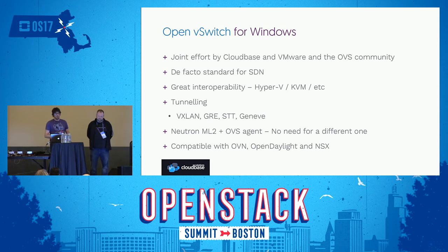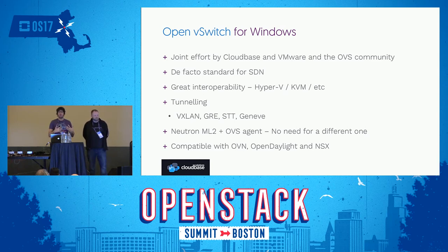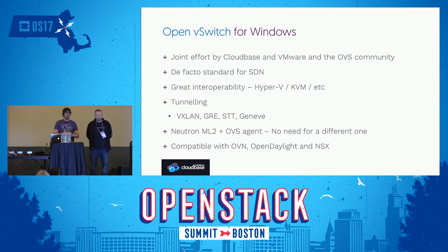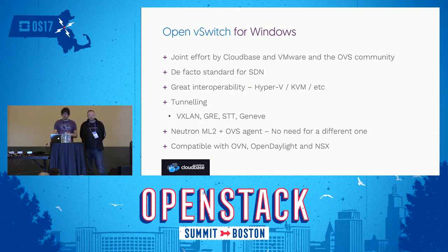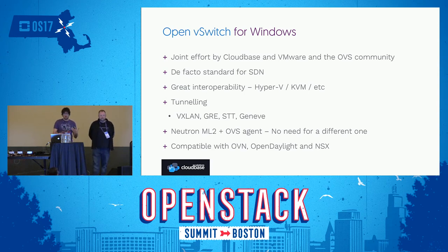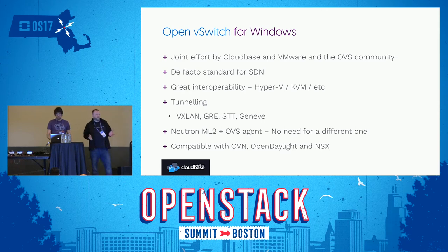One thing we did was port Open vSwitch to Windows. Open vSwitch is the lingua franca for software-defined networking in OpenStack. We knew it was very difficult for Hyper-V and Windows Server to have a future in OpenStack without porting this. We worked together upstream in the OVS project with VMware and the OVS community, and we're extremely happy about the results. You can have KVM and Hyper-V nodes in the same identical cloud. All tunneling is supported — VXLAN, GRE, STT, Geneve, and so on. We use the same ML2 OVS agent, and we also support OVN, OpenDaylight, and NSX. KVM and Hyper-V side-by-side with no extra configuration from a networking perspective, delivering a 100% seamless interoperable network for your guests.